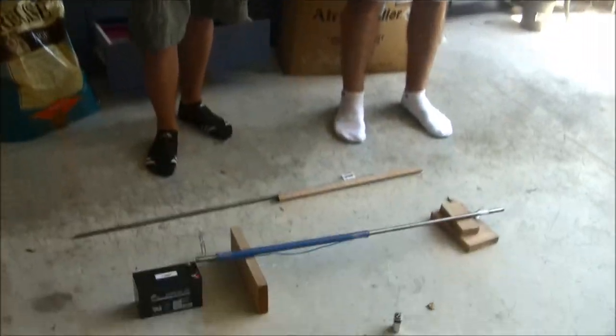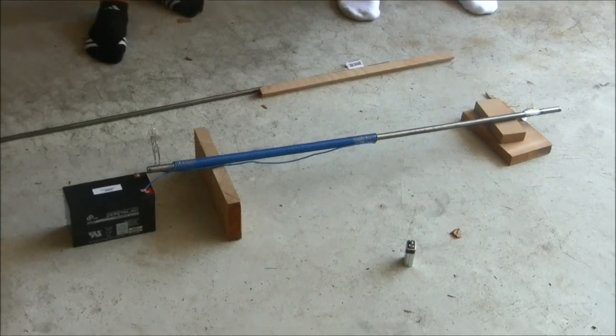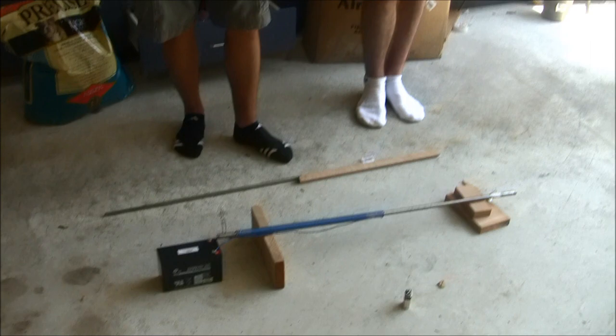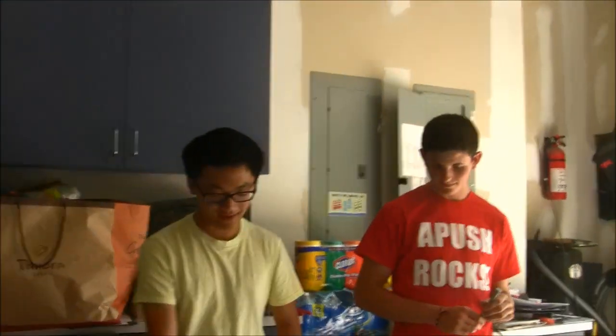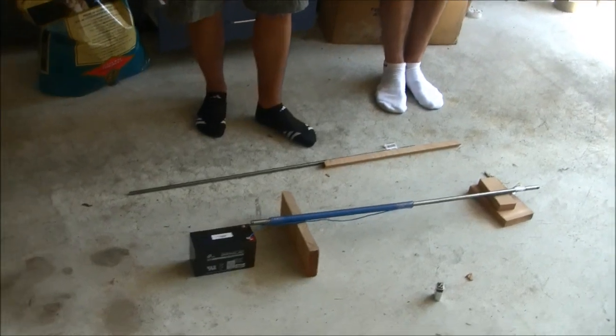So we built an electromagnet and here we have a 12 volt battery and a piece of steel rod and a 16 gauge copper wire. And electromagnets depend on two things mainly for their strength: the strength of the electric current passing through the wire and also the amount of coils that are wrapped around the rod.